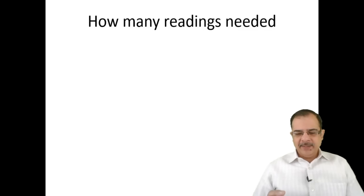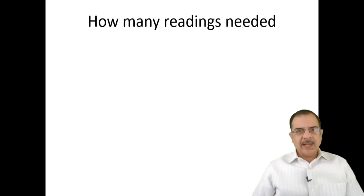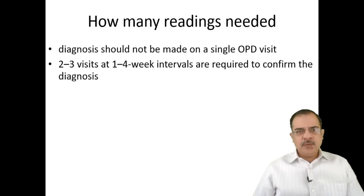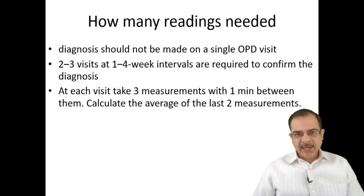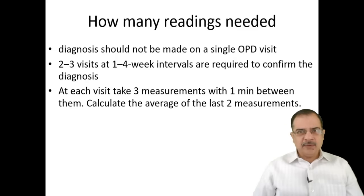How many readings are needed? For a patient presenting for the first time with hypertension, the guidelines say diagnosis should not be made on a single OPD visit. Multiple elevated readings are required. There should be 2 to 3 visits with intervals of 1 to 4 weeks to confirm the diagnosis. In each visit, take 3 measurements with a 1-minute interval between them. The average of the last two readings is taken as the actual blood pressure, since the first reading is often elevated due to patient anxiety.